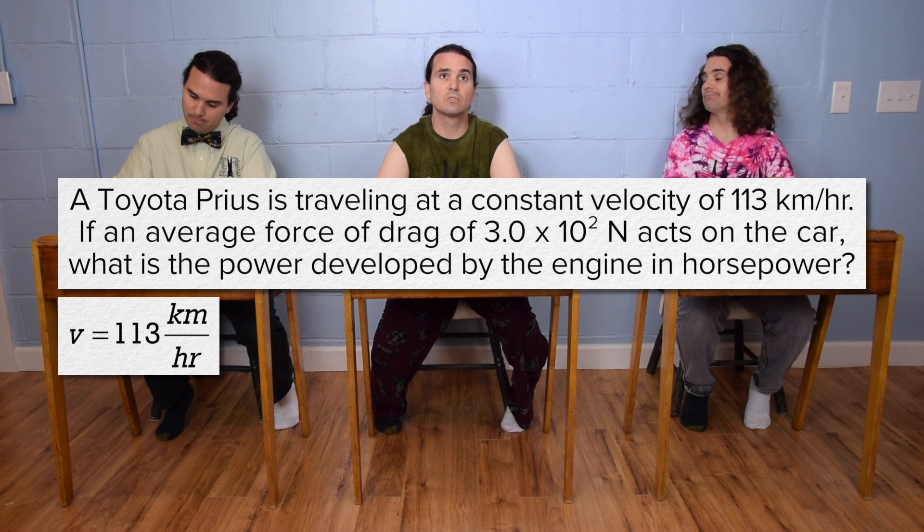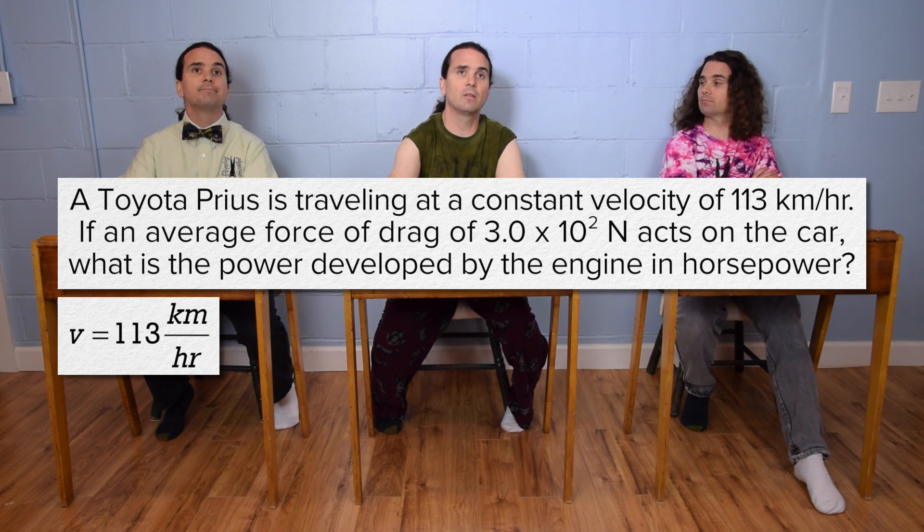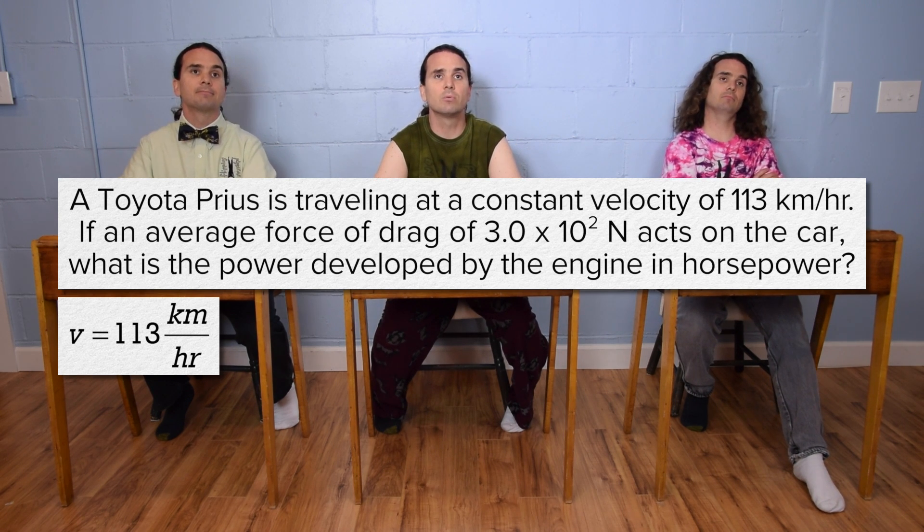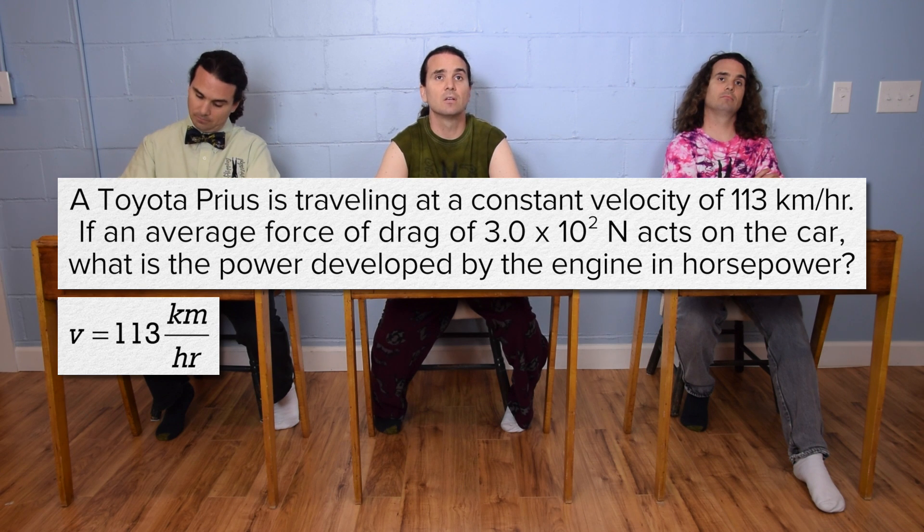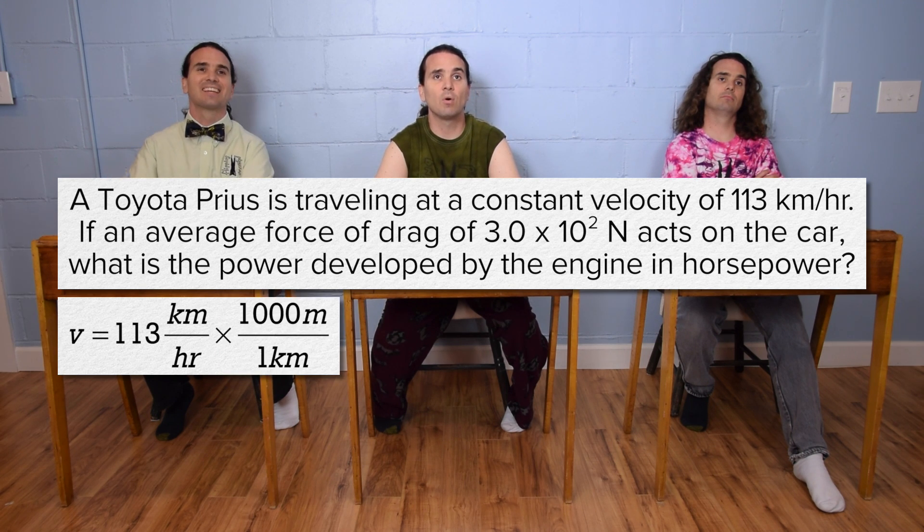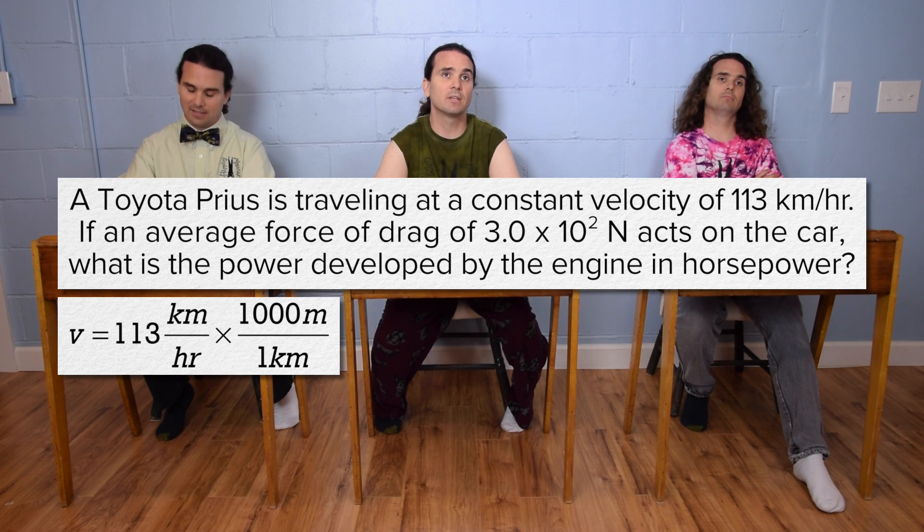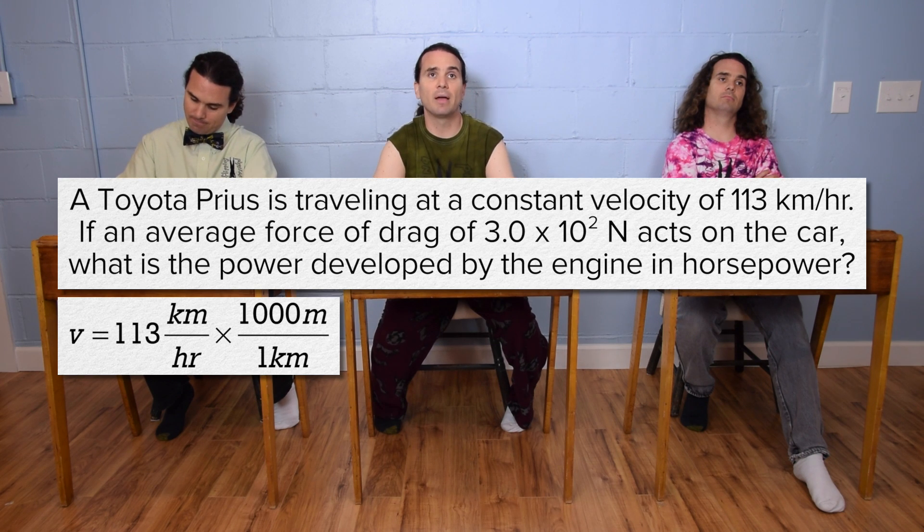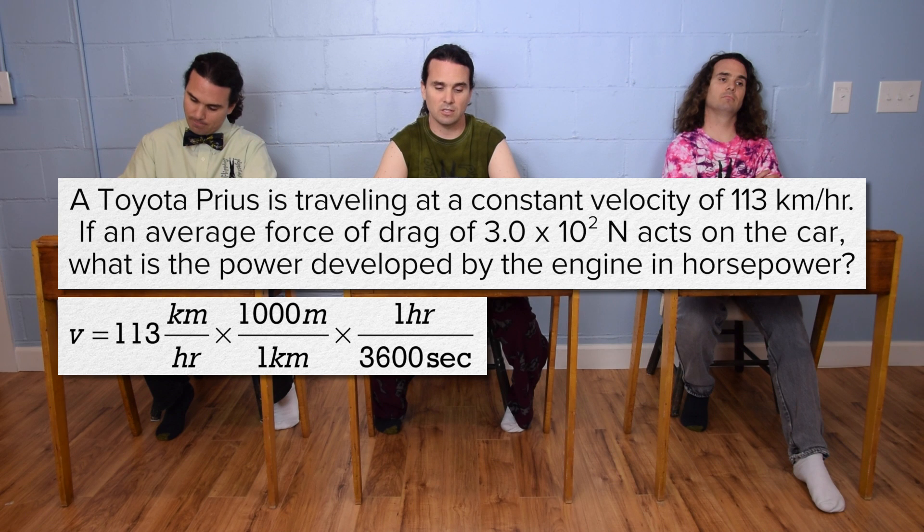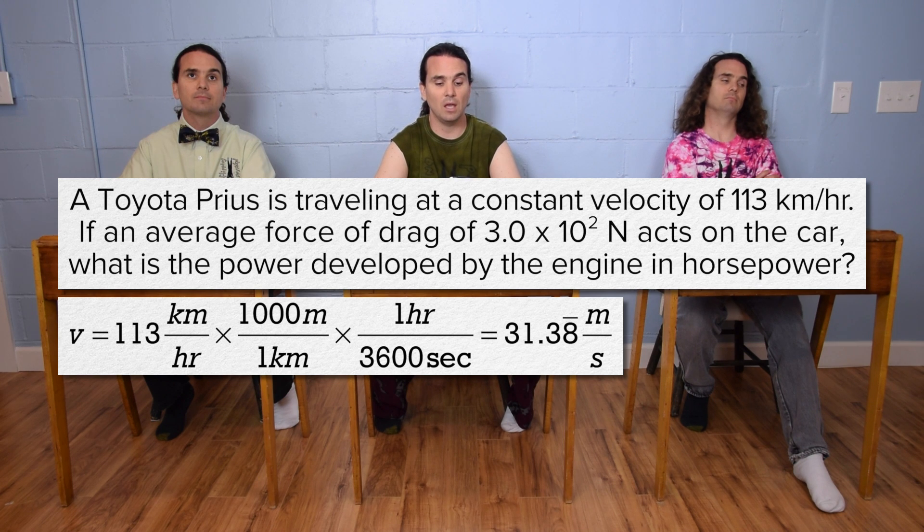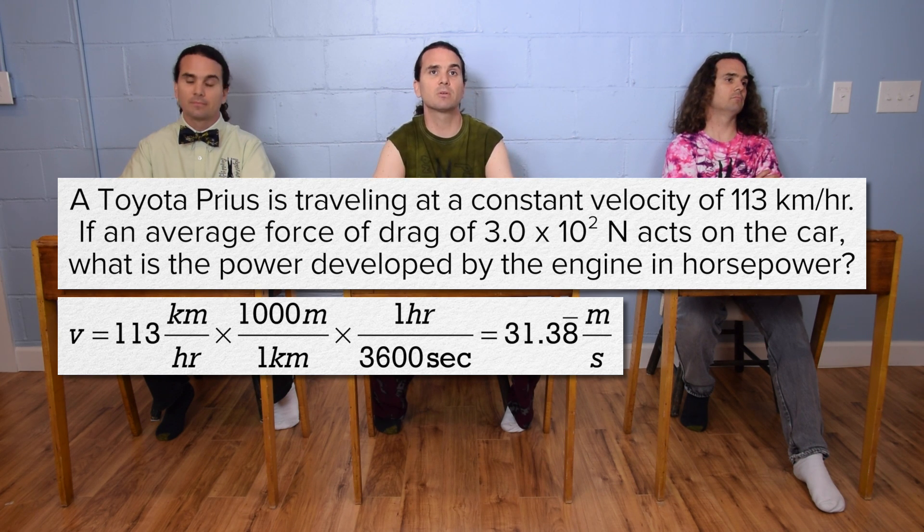Velocity is 113 kilometers per hour, which we need to convert to meters per second. So, multiply by 1,000 meters over 1 kilometer and by 1 hour over 3600 seconds. And you get 31.38 repeating meters per second.